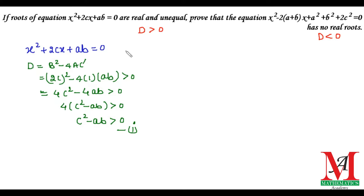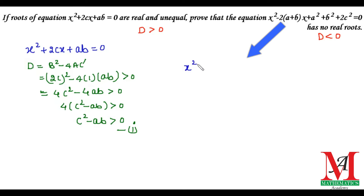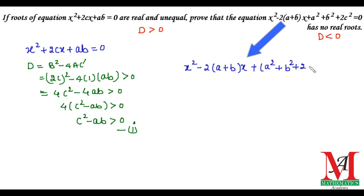For the second equation, x² - 2(a + b)x + (a² + b² + 2c²) = 0, we again need to prove that its discriminant D' is less than 0, which would confirm that it has no real roots.